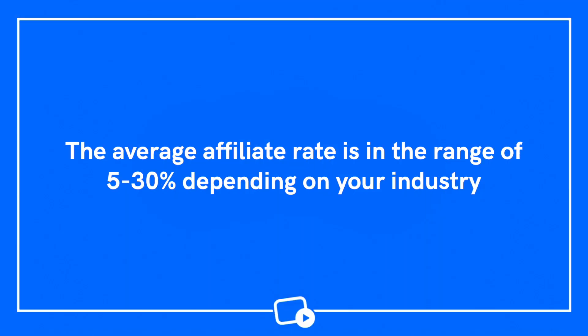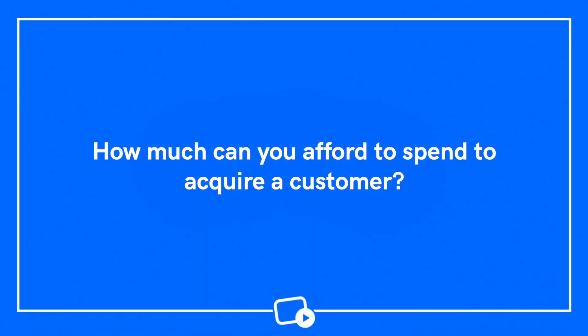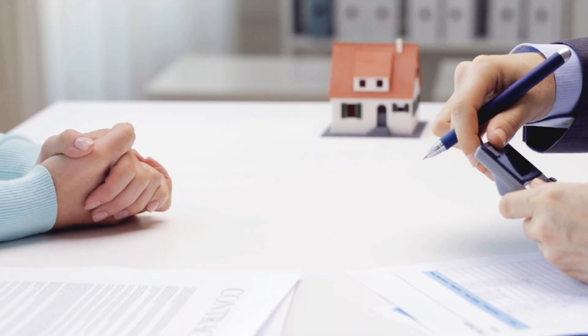There are many different ways to pay your affiliates. The average affiliate rate is in the range of five to thirty percent depending on your industry. A good rule of thumb: the higher the product cost, the lower the affiliate fee, and the lower the cost of your product, the higher the affiliate fee you'll need to keep prospective affiliates interested and active. To assess where you fall on that scale, you'll need to calculate your margins.